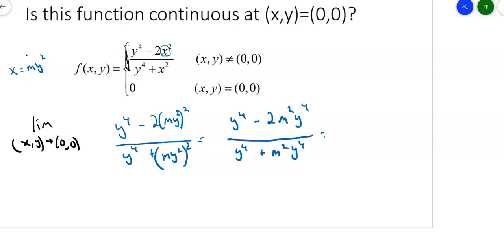Now I can factor a y to the fourth out of the top, and I'll get (1 minus 2m squared). On the bottom, if I factor out a y to the fourth, I get (1 plus m squared).